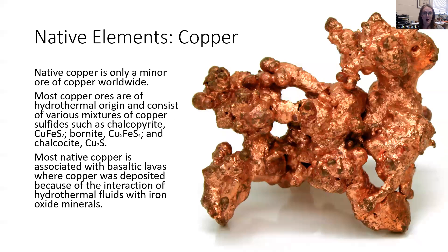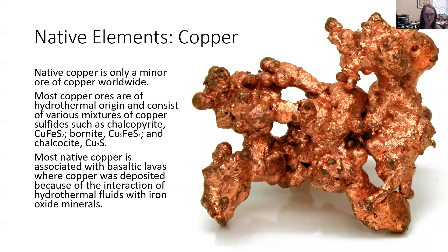Next up is copper. Native copper is only a minor ore of copper worldwide — copper is really good at being associated with other elements and minerals — but it's still typically of hydrothermal origin. Copper is very commonly found with other sulfides like chalcopyrite, bornite, and chalcocite. Most native copper is associated with basaltic lavas where it has been deposited through interaction with hydrothermal fluids and iron oxide minerals, so this theme of volcanic and igneous origins continues.